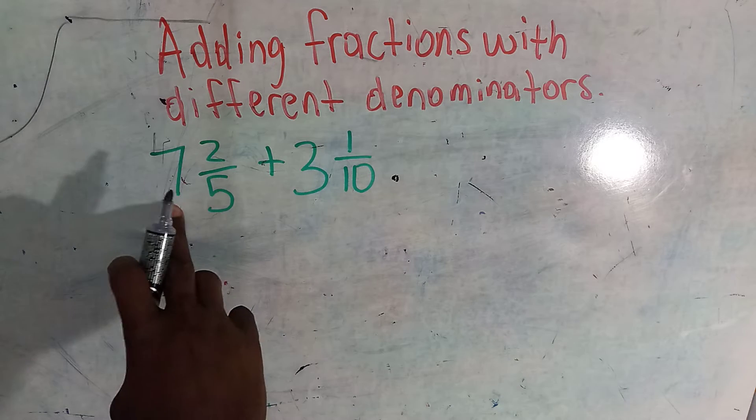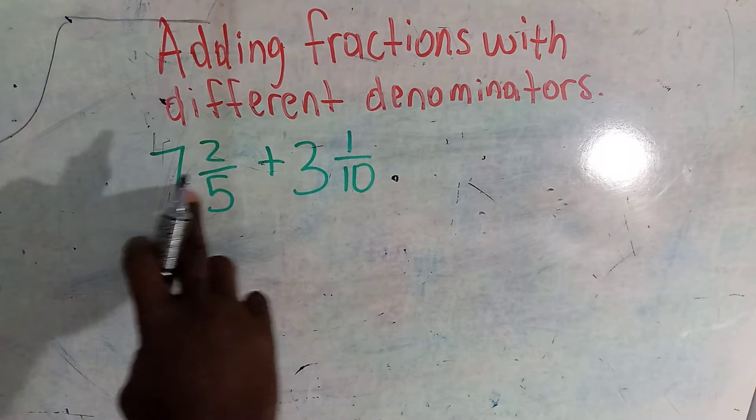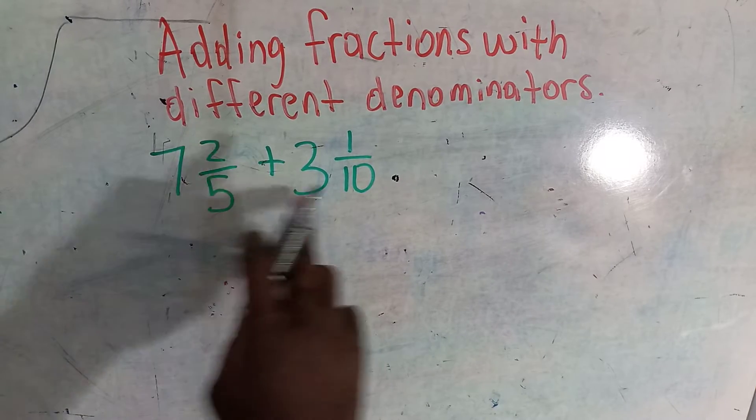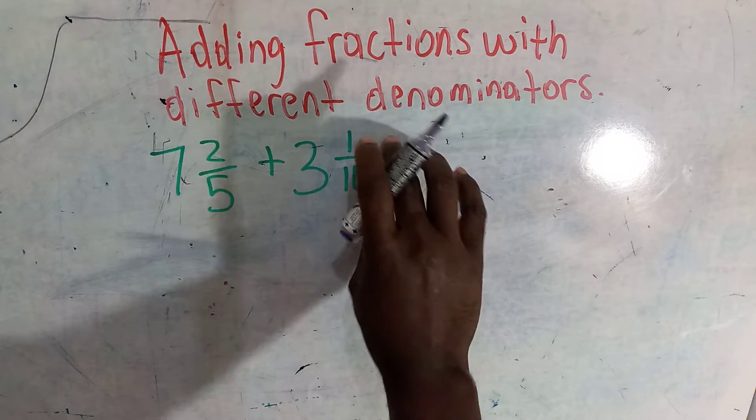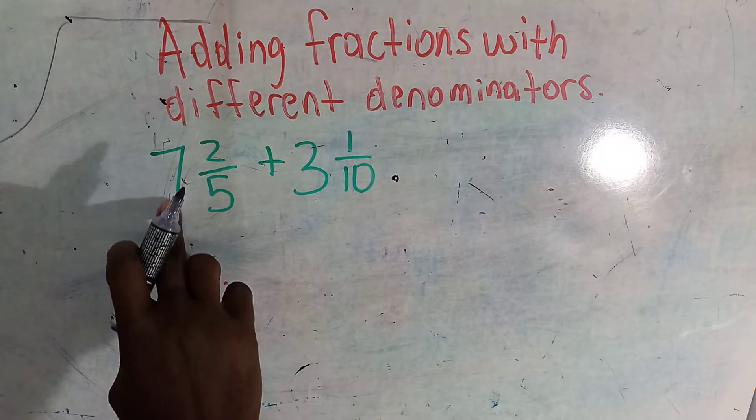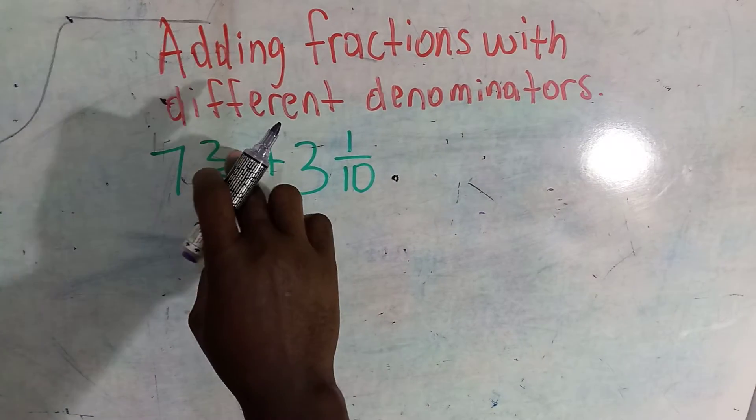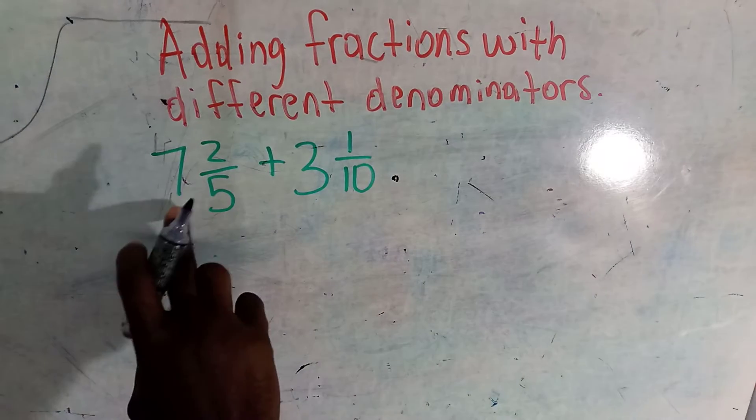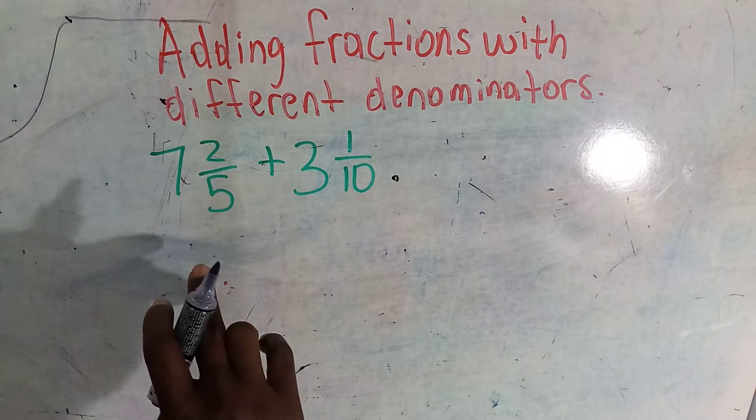The first thing you do is put away the whole numbers. These are whole numbers. These are the fractions. One out of ten, two out of five are fractions. These are whole numbers. A mixed number is a whole number and a proper fraction.